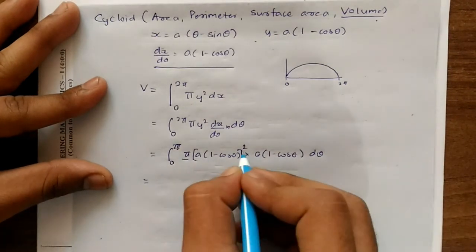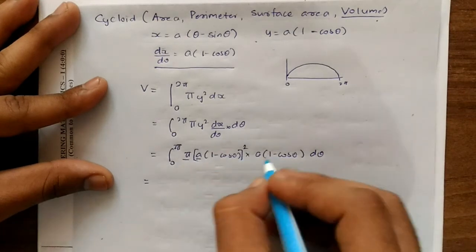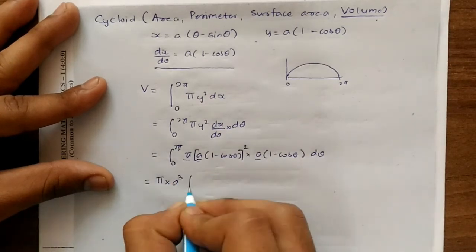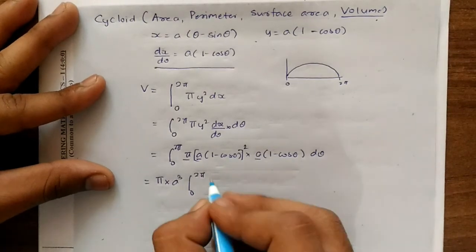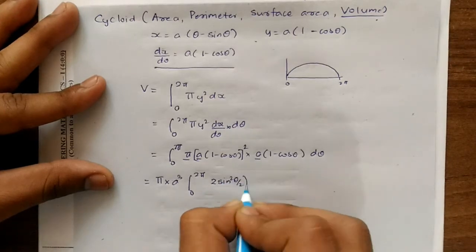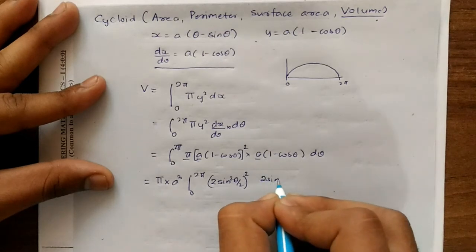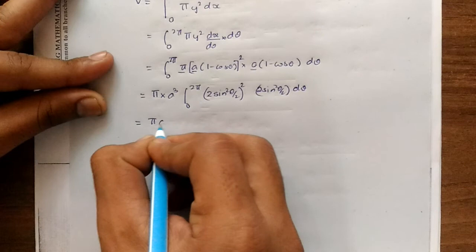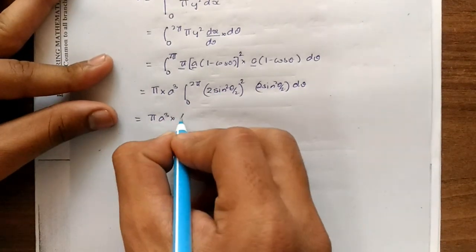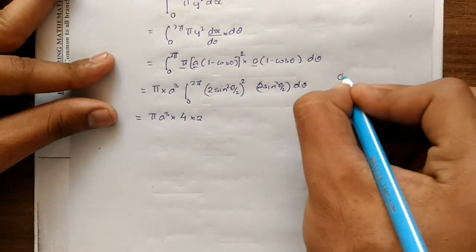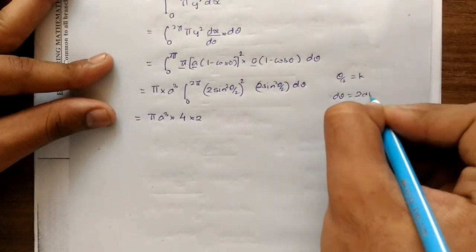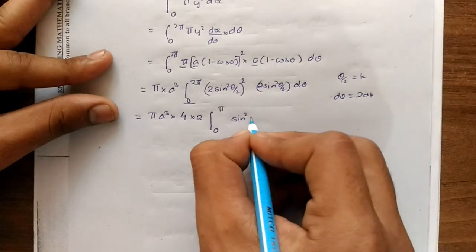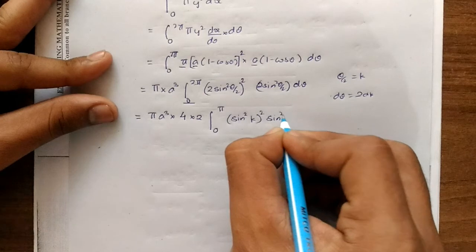We can take π outside, and since y is squared we take a² outside, and there is another a from dx/dθ, so we get π·a³ from 0 to 2π. Now 1 − cosθ = 2sin²(θ/2), whole cubed. Using the substitution θ/2 = k, dθ = 2dk, limits change from 0 to π: this becomes from 0 to π of sin²k whole squared · sin²k · 2dk, which is sin⁶k. So it becomes 4×2 = 8, giving 8πa³, and pulling out the 2 gives 16πa³. Changing limits to 0 to π/2 gives another factor of 2, so 32πa³ from 0 to π/2 of sin⁶k dk.